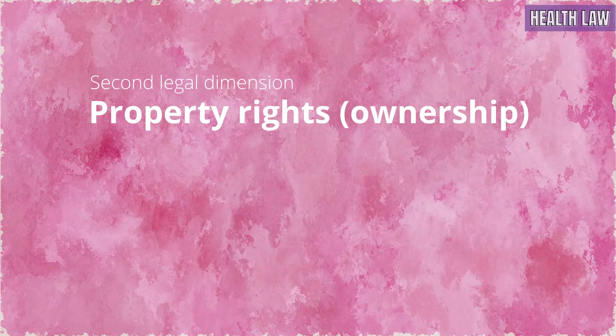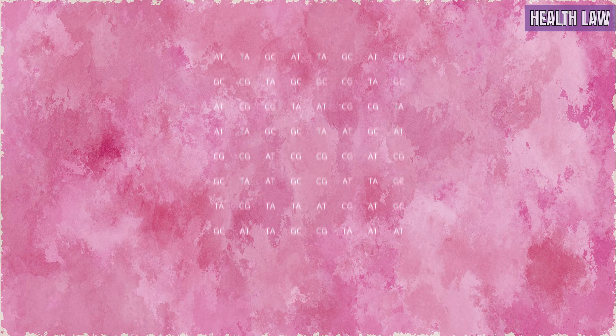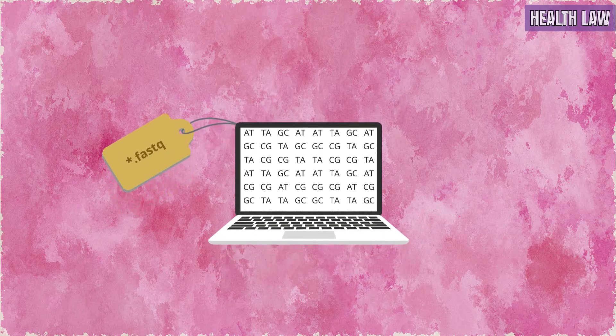The second legal dimension that is relevant to personal genomic sequence data is property rights, in particular ownership. Different from personality rights, which are bound to a specific person's personality, ownership of personal genomic sequence data is not bound to the data subject, but is acquired independently. When an instance of personal genomic sequence data is generated by a sequencing laboratory, it is a new legal object that is created, and can be acquired by the first person who intends to be the owner and who takes effective control of the data. Note that ownership is not vested in the personal genomic sequence data in the abstract, but in a specific instance of the personal genomic sequence data.